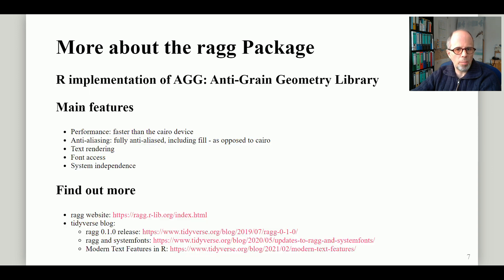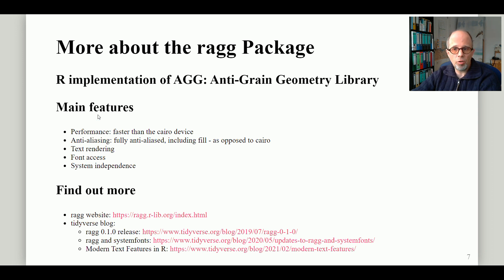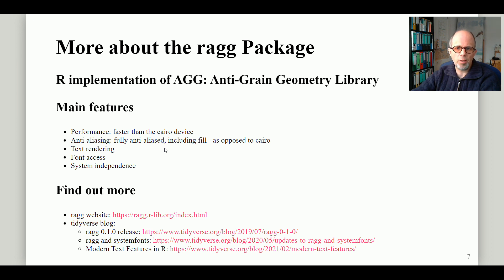To finish off, a little more about the ragg package. Ragg stands for R implementation of AGG, which is the Anti-Grain Geometry library, an open-source plotting library written in C++. Performance is not the only main feature — it's also about anti-aliasing. The Cairo device is not fully anti-aliased, whereas AGG and ragg are fully anti-aliased, meaning that fills are anti-aliased as well. Another pain point in plotting is often text rendering and especially fonts — access to non-default fonts like user-defined fonts.